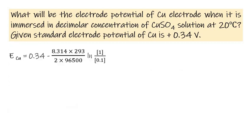Substituting values: R = 8.314, T = 293 K, n = 2, F = 96500. Now 0.34 - 0.01262 × ln 10.